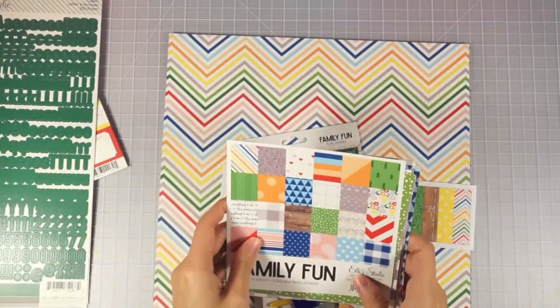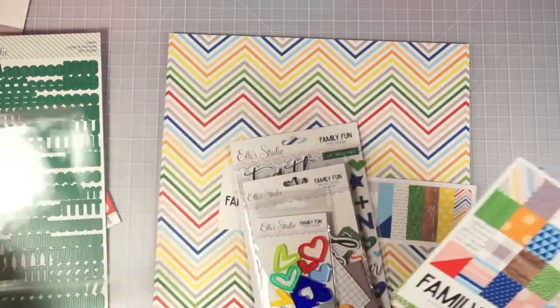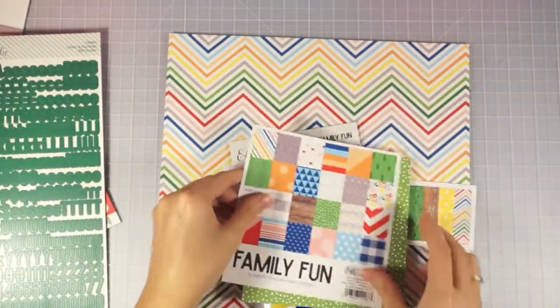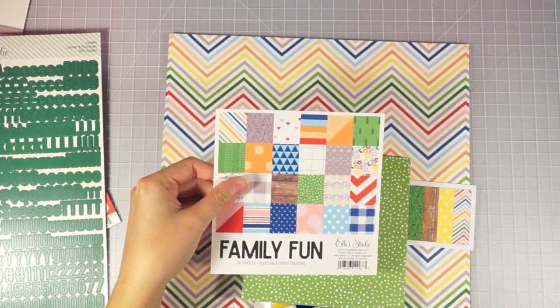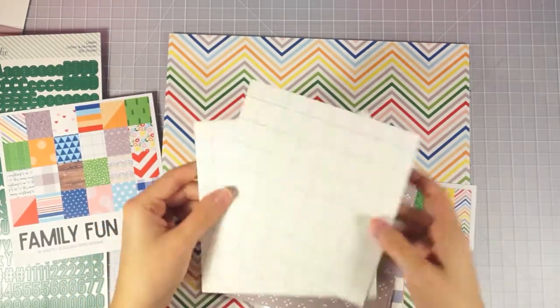And then the six by six paper isn't actually a pad. It just came in a little plastic thing and they're just loose and they're double-sided. So we'll walk through some of these. It says 12 sheets. It says 24 sheets, 12 double-sided designs. So you end up getting two of each.